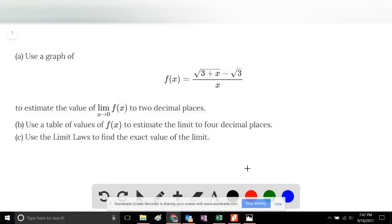This is problem number 34 of the Stewart Calculus 8th Edition, section 2.3. Part A: Use a graph of f(x) equals the square root of 3 plus x minus the square root of 3 over x to estimate the value of the limit as x approaches 0 of this function to two decimal places.